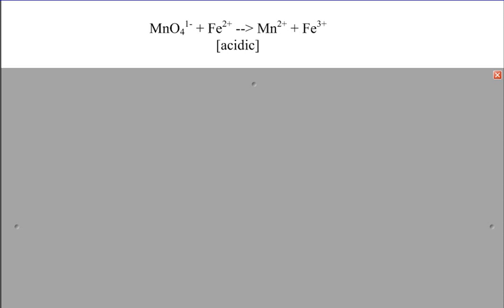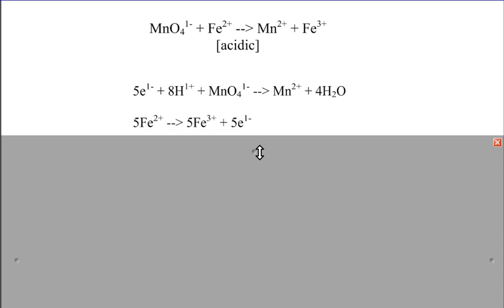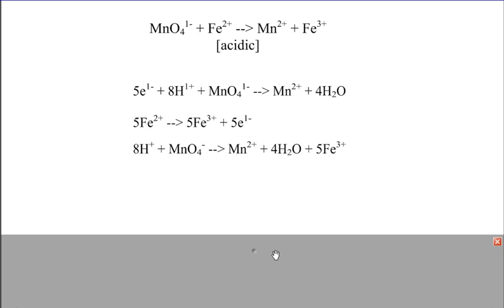In any redox reaction, we have a transfer of electrons from one element or compound to another. So let's take the reaction between permanganate and iron 2. In the case of permanganate to iron 2 in an acidic solution, there's a transfer of 5 electrons. And the actual balanced chemical reaction looks like this.